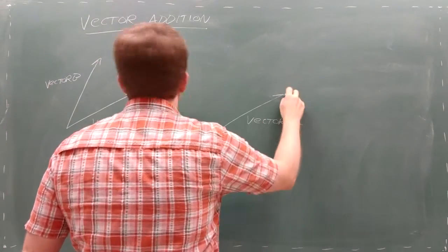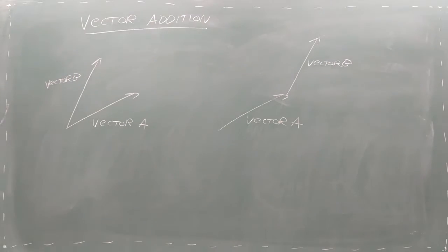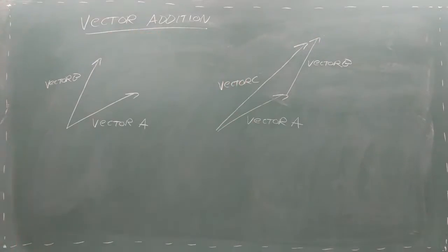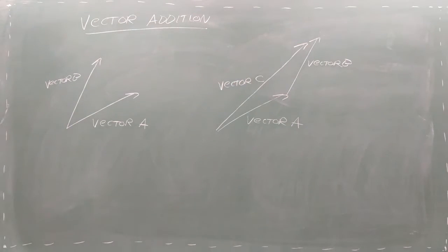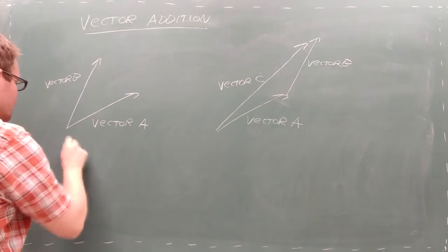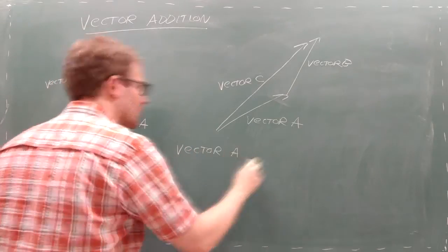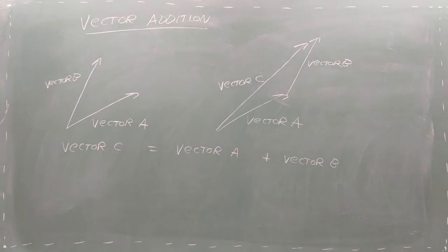You can visualize this process as placing the beginning of vector B at the end of vector A. The total vector, let's call it vector C, is then drawn from the beginning of vector A to the end of vector B.